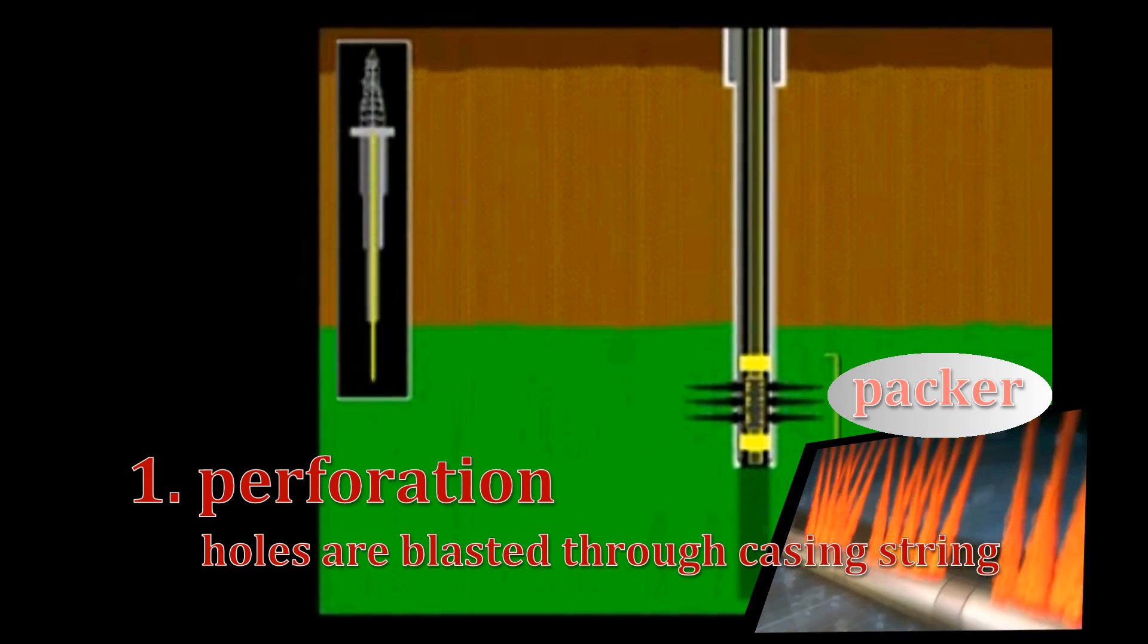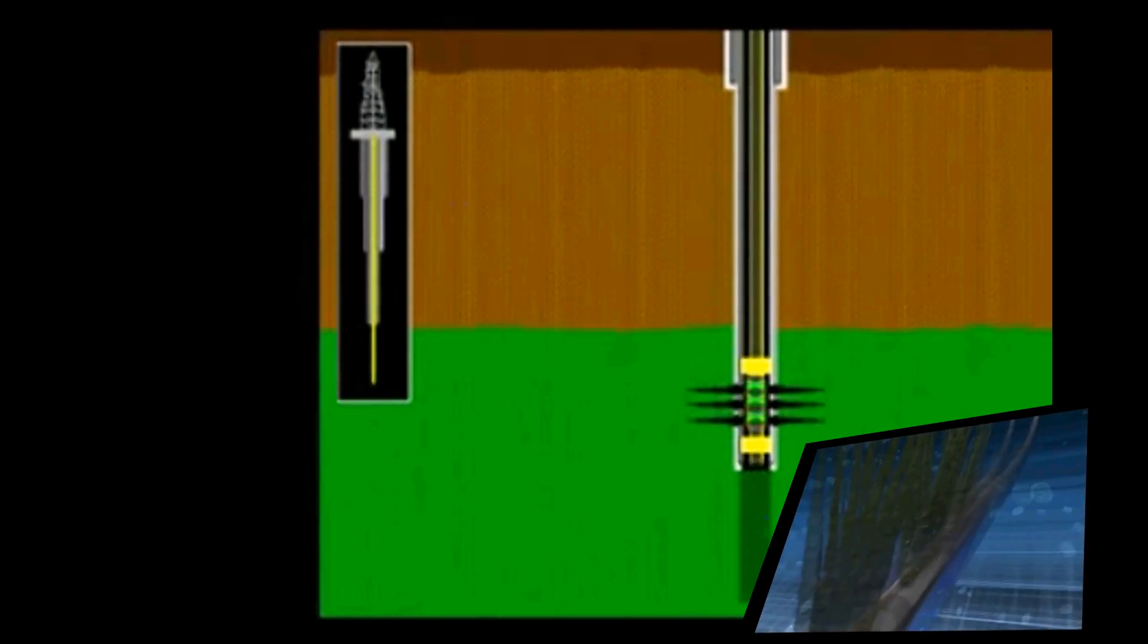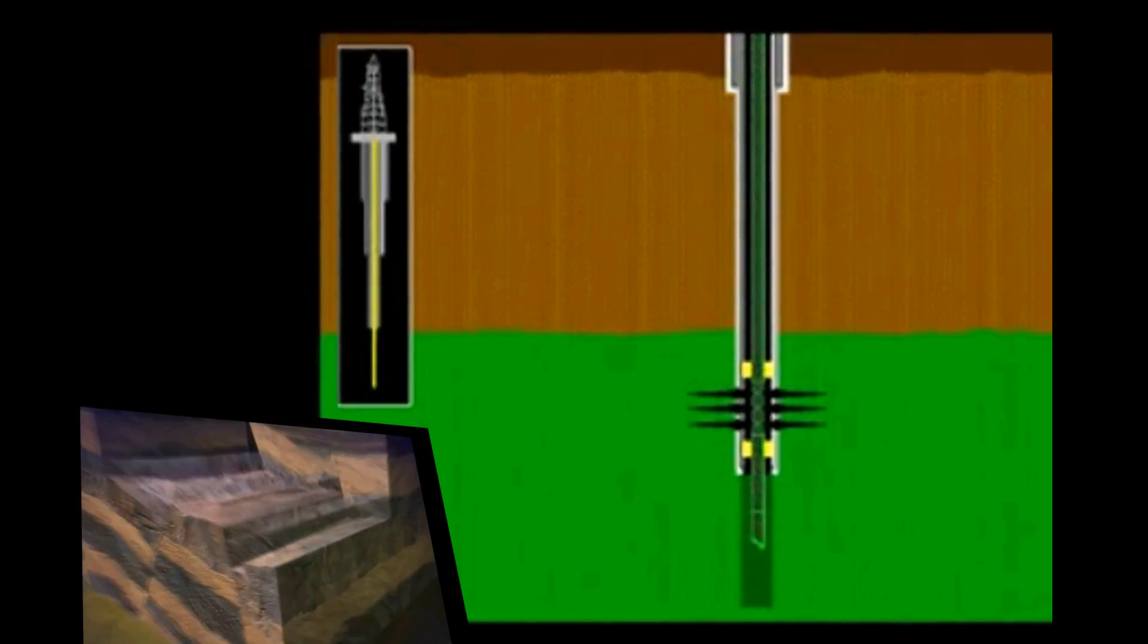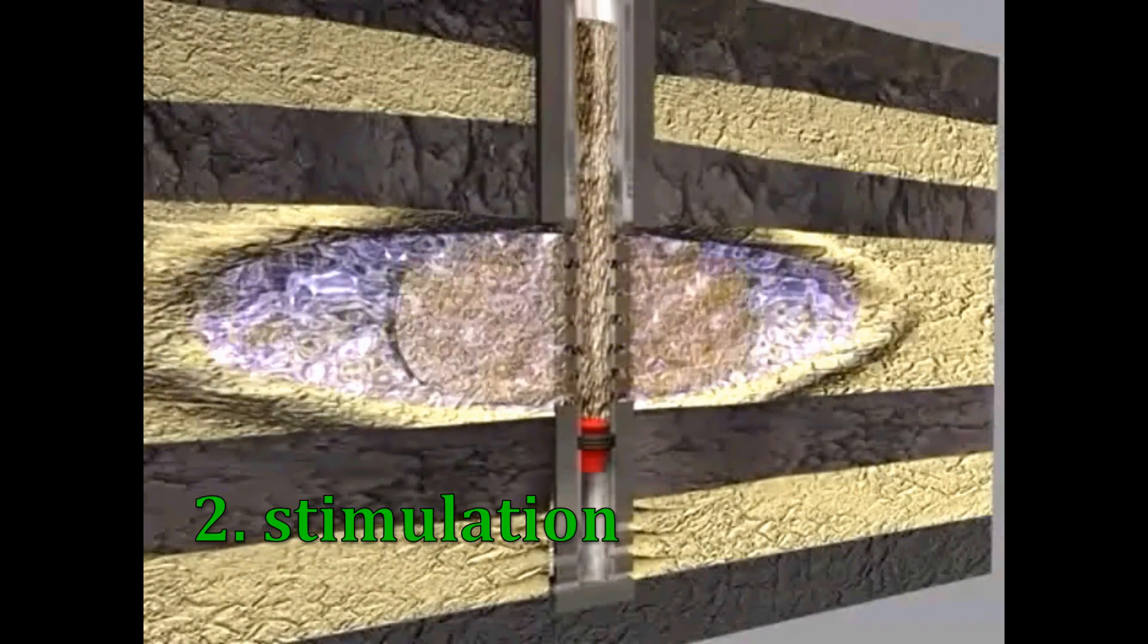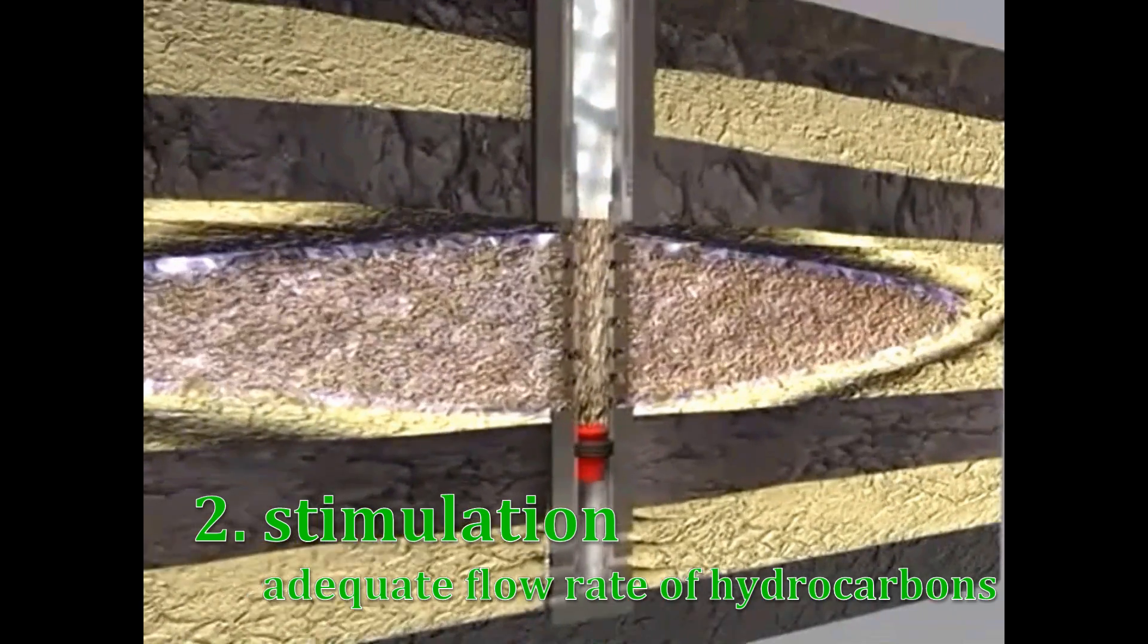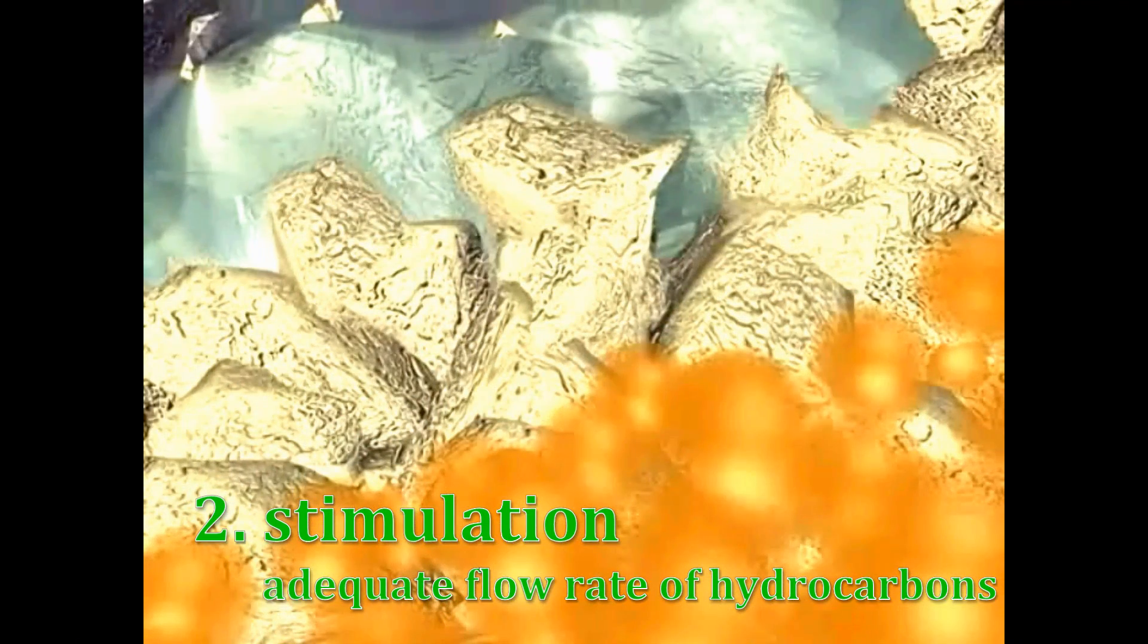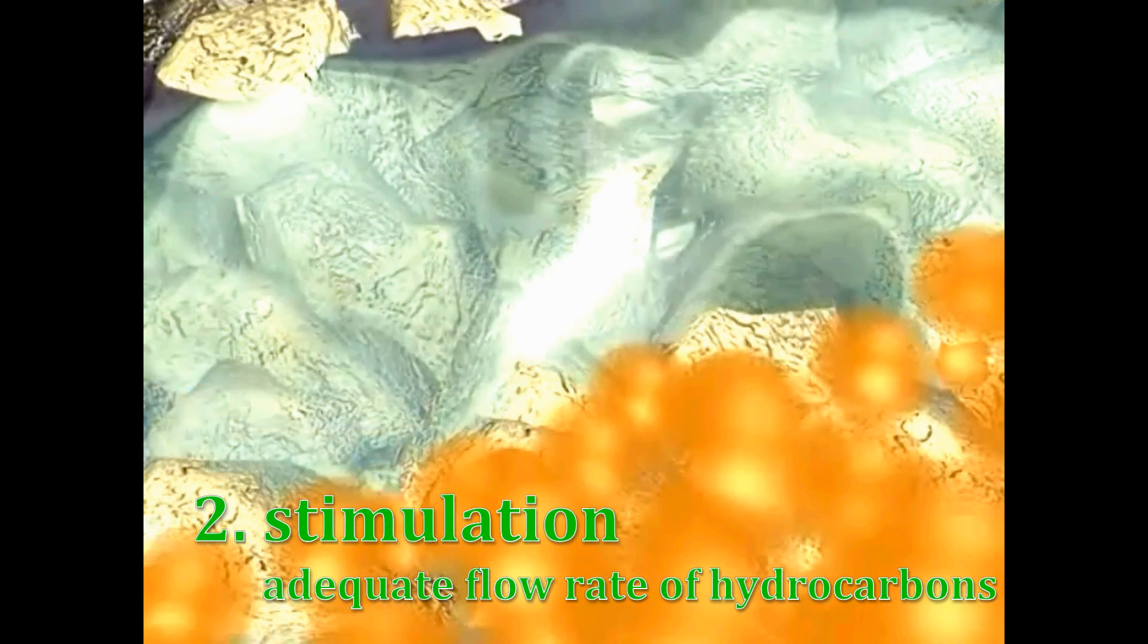which means that it will be blasted through the casing string, the cement, and deep into the formation. Second, stimulation. After perforating, the zone is stimulated so that an adequate production or flow rate of the hydrocarbons can be attained.